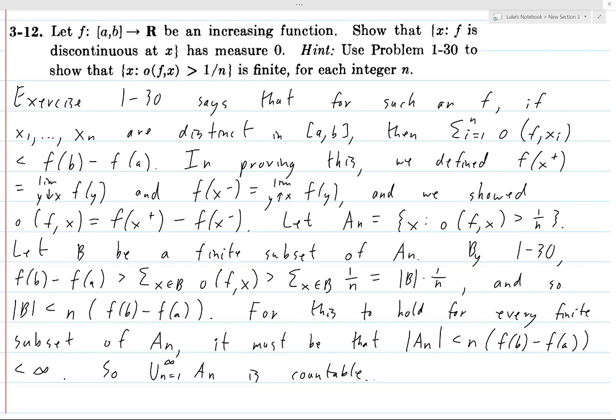First you list all the elements in A1, then all the elements in A2, then all the elements in A3, etc. And then you have a list of all the elements in An, and thus the union of the An's is countable.